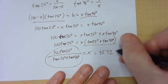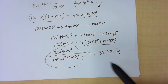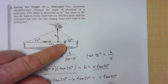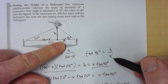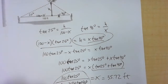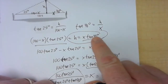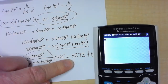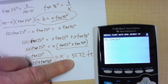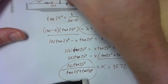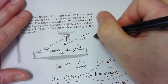That's not the final answer — we don't know the height yet. Now that we know x equals 35.72, we find h. Since h equals x times tan(40°), we multiply 35.72 times tangent of 40 degrees, and we get 29.97. So the helicopter is 29.97 feet above the people.